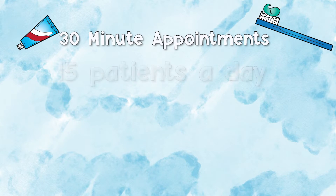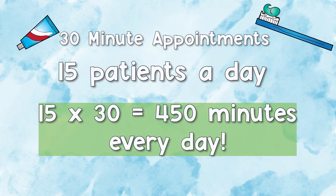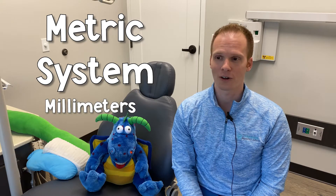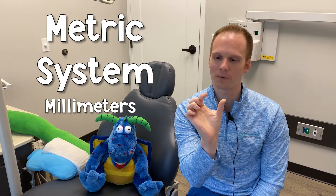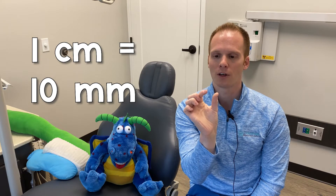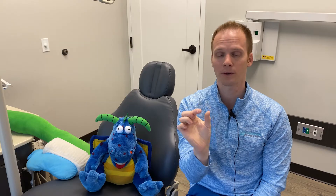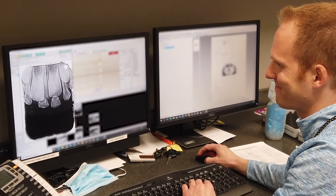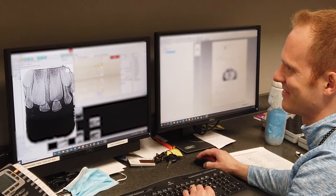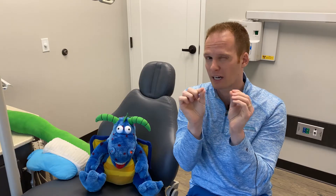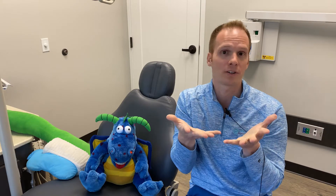We actually do use the metric system — we generally measure things in millimeters, which is really small. One centimeter is 10 millimeters. We know different averages of tooth sizes. When a cavity goes into a tooth, it might go in a millimeter or two, sometimes a few more millimeters. That's how I can approximate how close we are to the nerve of that tooth, because we want to keep that tooth safe and healthy.